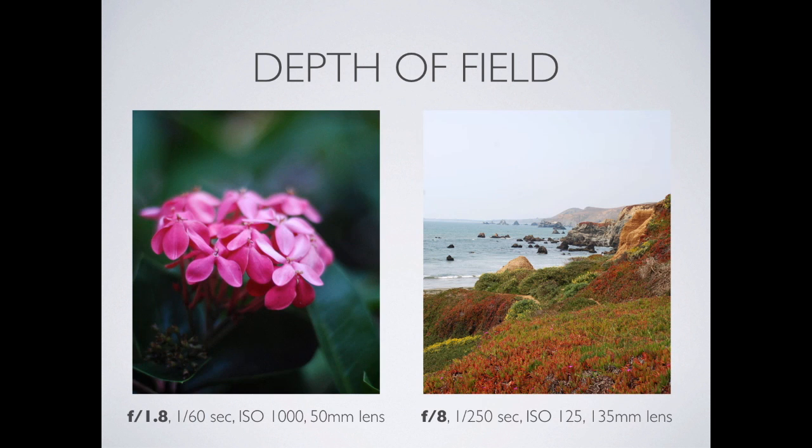The f-stop number is kind of confusing because it's an inverse number. A really small f-number — f1.8, f1.4 — means the aperture is really big, a lot of light coming in. The opposite, f8, f16, f32 — and no, I'm not talking about fighter jets, I'm talking about apertures — if we had an f16, the hole in the lens is really small.